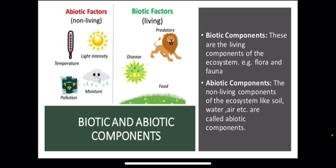So let us learn about them in detail. Biotic components, these are the living components of the ecosystem, example flora and fauna. Abiotic components, the non-living components of ecosystem like soil, water, air, etc., are called abiotic components.